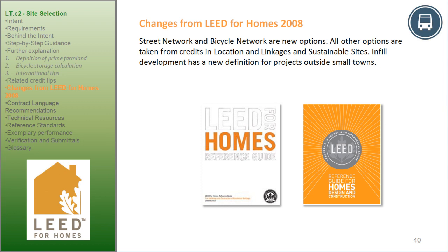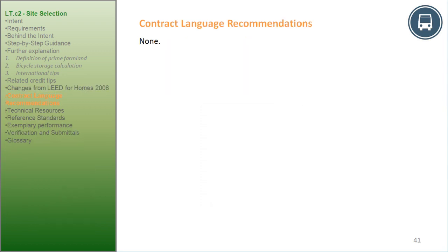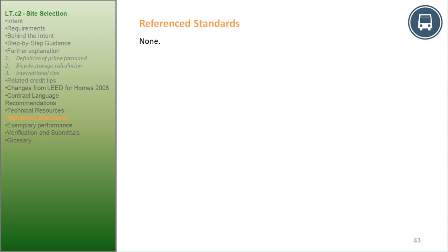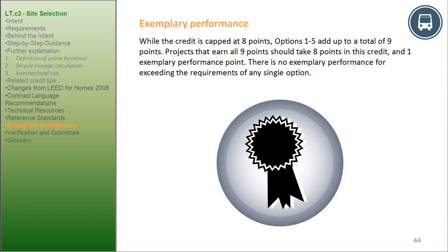Contract Language Recommendations: none. Technical Resources: none. Reference Standards: none. Exemplary Performance: while the credit is capped at 8 points, Options 1 to 5 add up to a total of 9 points. Projects that earn all 9 points should take 8 points in this credit and one exemplary performance point. There is no exemplary performance for exceeding the requirements of any single option.